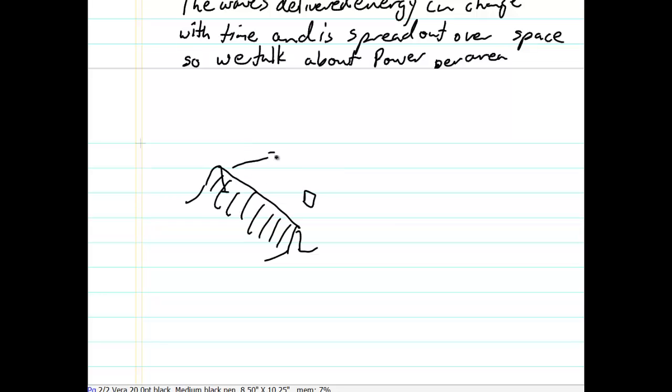As this wave comes in like this, a lot of this water is going to miss this box, and so that power is not going to be delivered to the person or the object. Let's say it's a house here about to be wiped out by a giant wave.